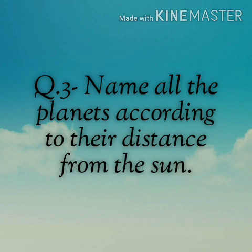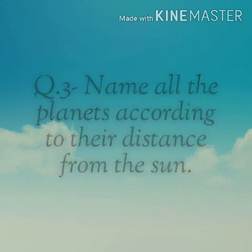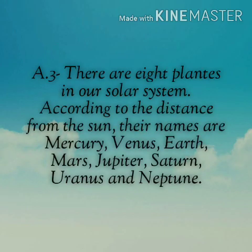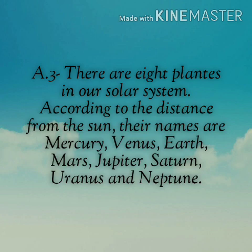Question number 3: Name all the planets according to their distance from the sun. There are 8 planets in our solar system. According to their distance from the sun, their names are: Mercury, Venus, Earth, Mars, Jupiter, Saturn, Uranus, and Neptune.